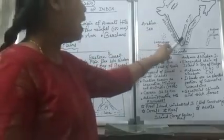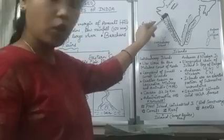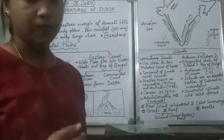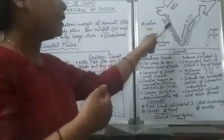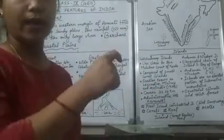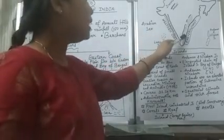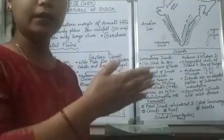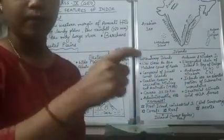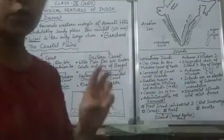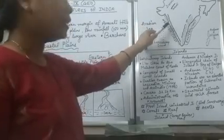If we talk about the western coast, as you can see in the diagram the shaded region represents the western coast and the other shaded region represents the eastern coast. The Western Ghats lie very close to the western coast, so the area between the western coast and the Western Ghats forms a narrow plain. In contrast, the Eastern Ghats are at a greater distance from the eastern coast, so we find wider plains there.